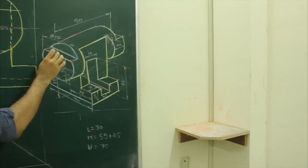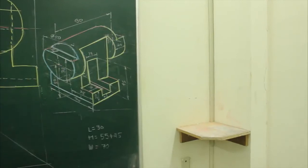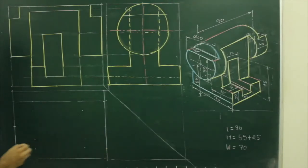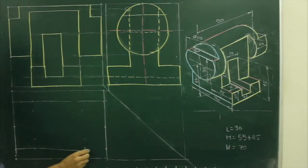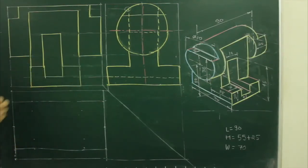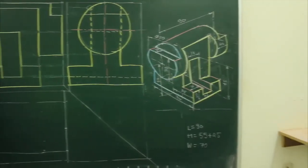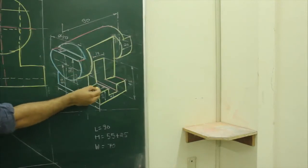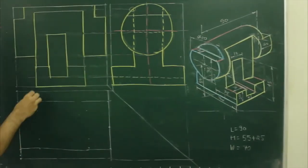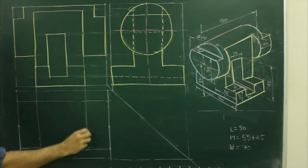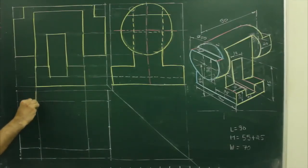First we will draw this part. This part is not full — in the main diagram, they have removed the circular portion in between; there is a cavity. They have gone inside by 20. So from both sides we will take 20 inside, project from the front view, and go inside by 20.